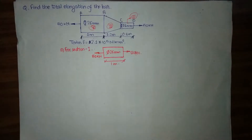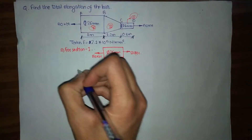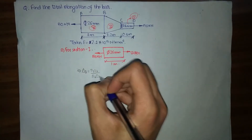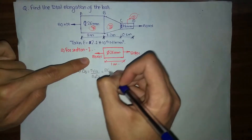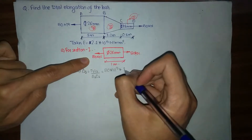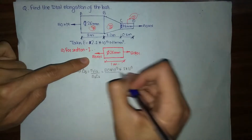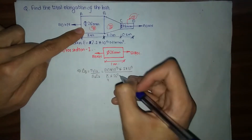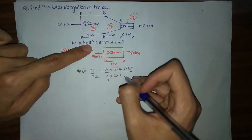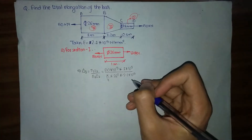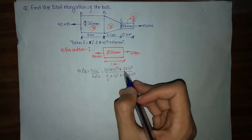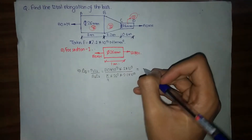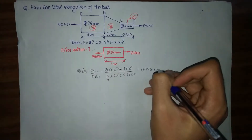We calculate the elongation of portion one, denoted δ₁. The formula is δ₁ = P₁L₁ / A₁E₁. We have P₁ = 50 kN = 50×10³ N, L₁ = 1 meter = 1×10³ mm. The area A₁ = (π/4)×26² mm², and Young's modulus E = 2.1×10⁵ N/mm². We convert meters to millimeters to keep consistent units.